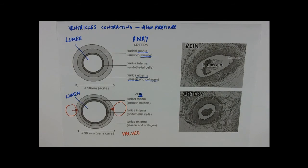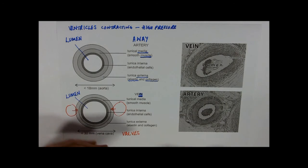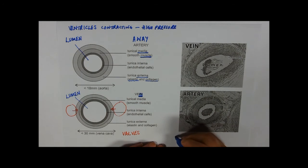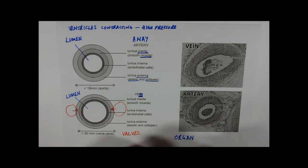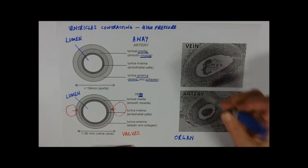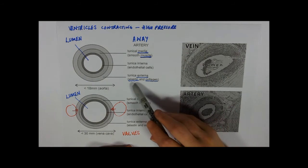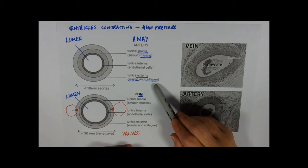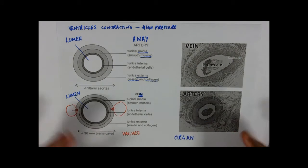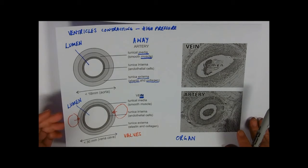So that's the arteries and veins. Now these are both organs. Why are they organs? What's an organ made of? An organ is made up of different tissues. So here we've got muscle tissue, we've got epithelial tissue, we've got elastic tissue, and we've got collagen tissue in both of those. That makes them an organ.